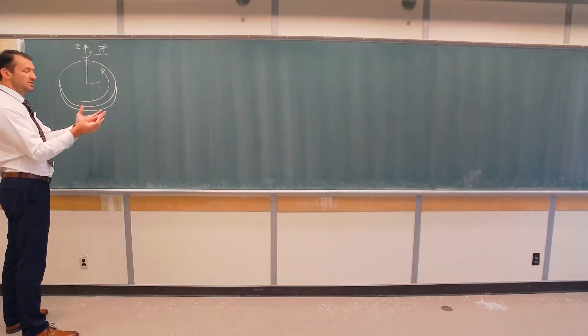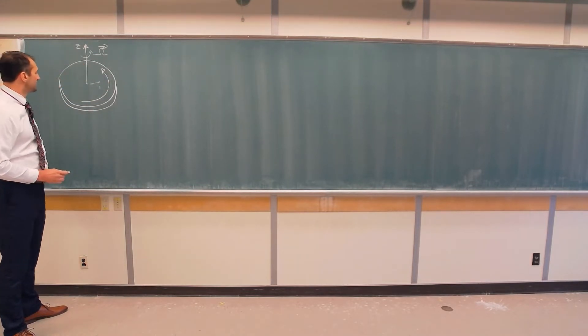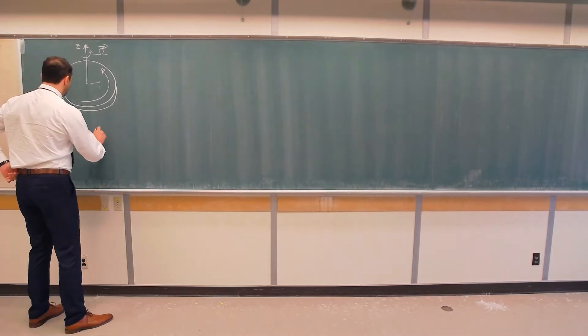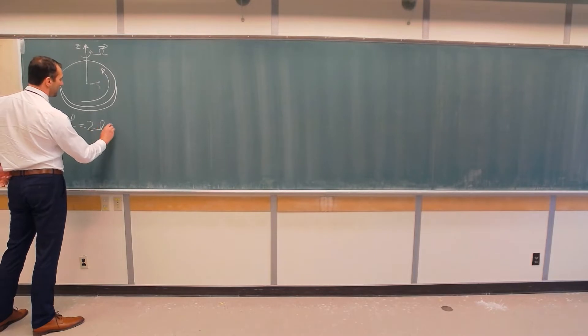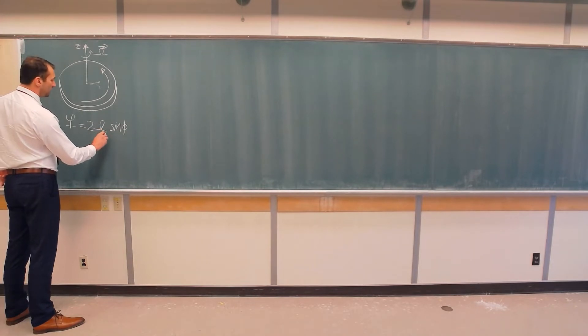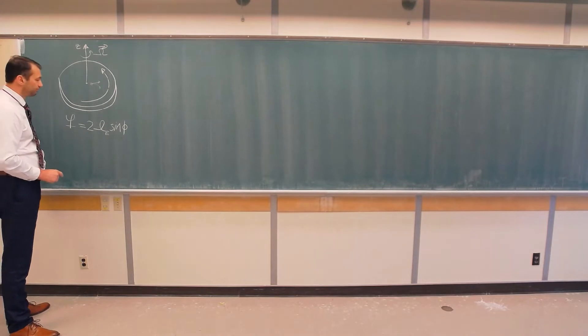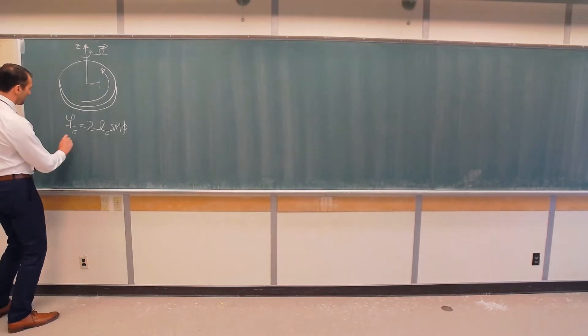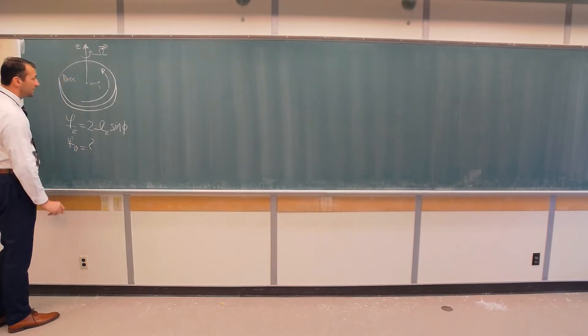Instead of spherical symmetry of our Earth, here we have two-dimensional disk. Well, to find Coriolis parameter, first of all, Coriolis parameter for our planet, you will remember, was two omega sine phi, where omega is angular velocity of the Earth, let's say omega e, and phi is latitude. So this is Coriolis parameter for Earth, but what is Coriolis parameter for this disk? That's the question.